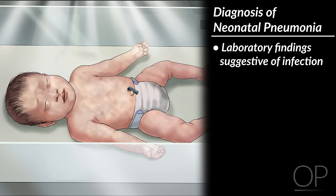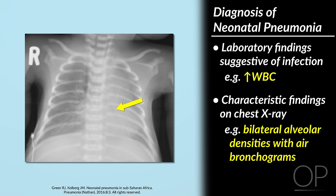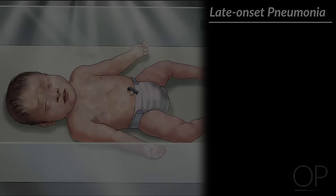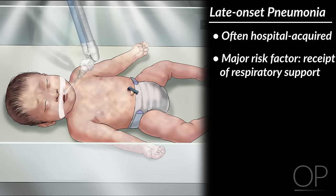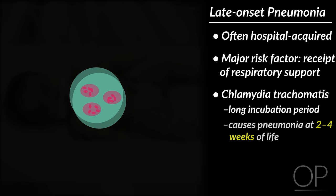Diagnosis of neonatal pneumonia is made via laboratory findings suggestive of infection, such as an elevated white blood cell count, and characteristic findings on chest x-ray, which often shows bilateral alveolar densities with air bronchograms. The empiric treatment of early onset pneumonia is often with ampicillin and gentamicin. Late onset pneumonia is often hospital acquired, with a major risk factor being receipt of respiratory support. Another possible etiology of late onset pneumonia is chlamydia trachomatis, which has a very long incubation period and causes pneumonia at two to four weeks of life.